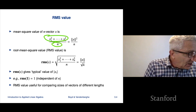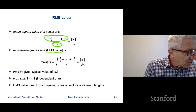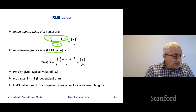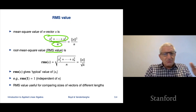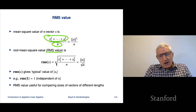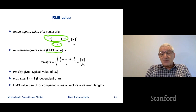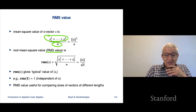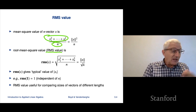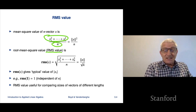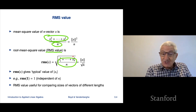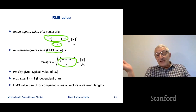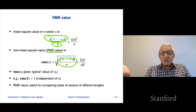What's very commonly used is something called the RMS value or root mean square value. It's used throughout engineering and many other fields. It is literally what its name says: it's the square root of the mean square value. That's equal to the norm of x divided by the square root of n. So it's nothing more than the norm of x divided by square root n.